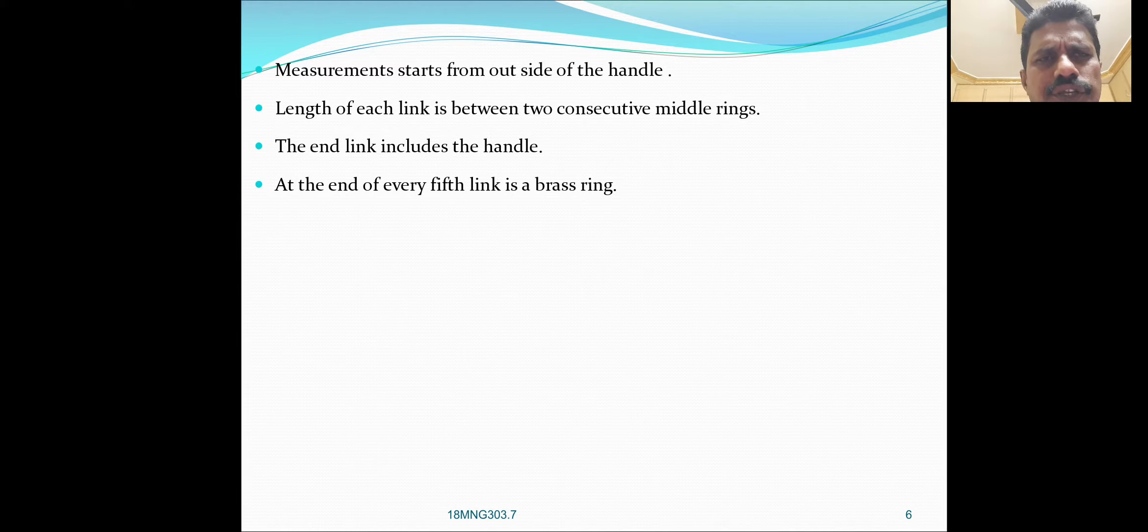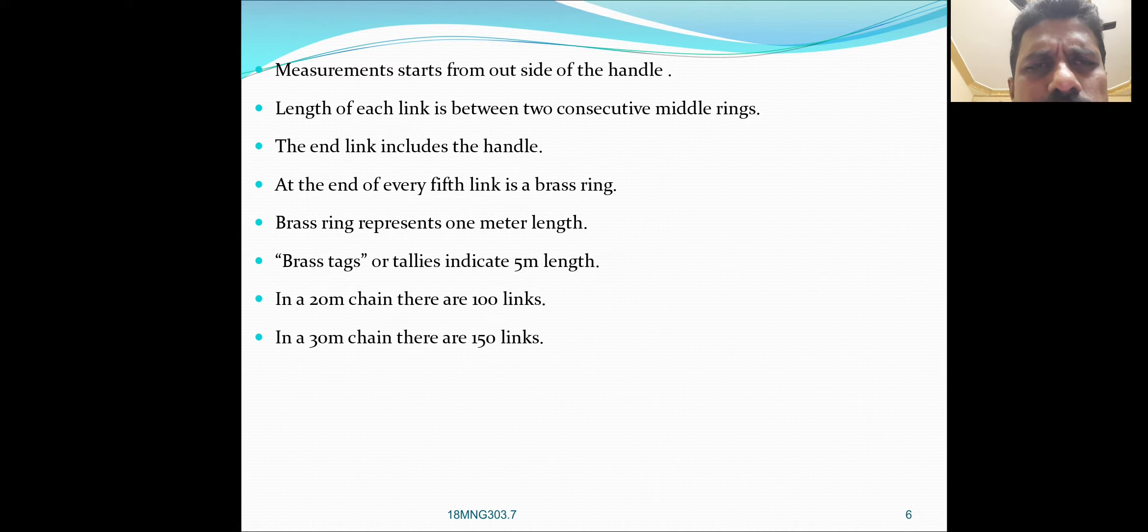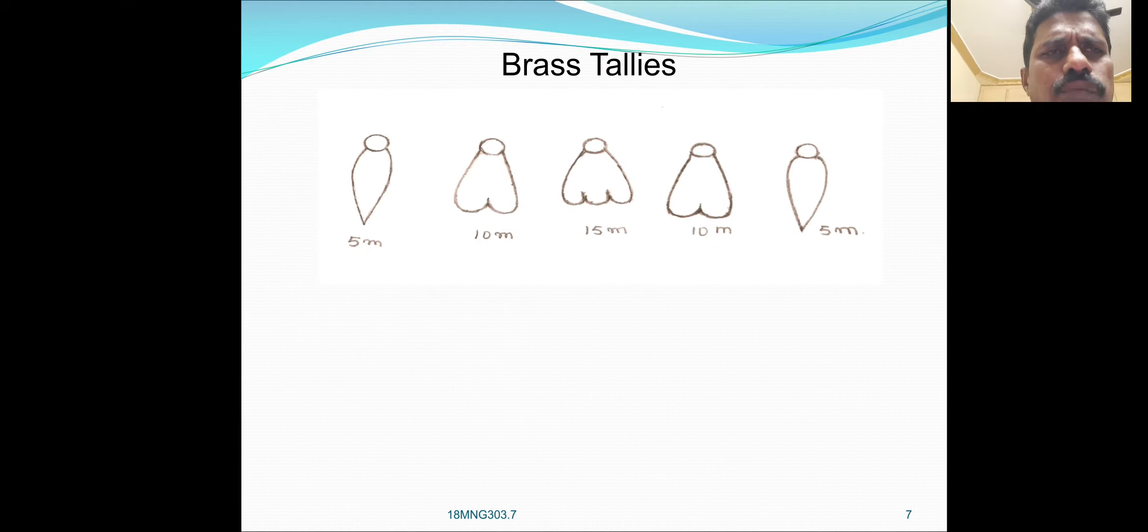At the end of each link is a brass ring. Brass ring represents one meter length. Brass tags or tallies indicate five meters length. In a 20 meter chain, there are 100 links. In a 30 meter chain, there are 150 links.